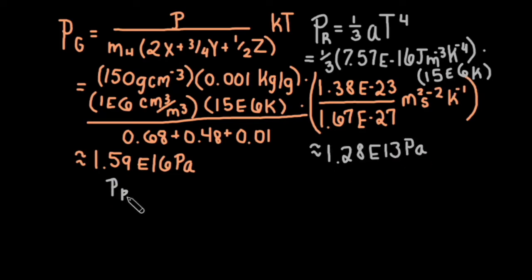If we compare the radiation pressure to the gas pressure at the core of the sun, we find that the ratio of radiation pressure to gas pressure is about 8e to the negative fourth. Clearly, gas pressure dominates in the sun's core.